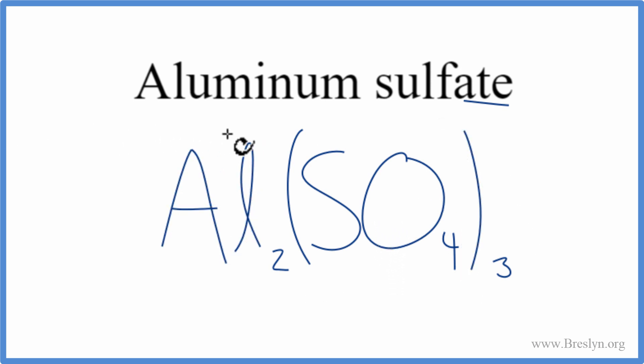Let's check our work real quick. Aluminum, we said, was 3 plus, and then the sulfate ion was 2 minus. So I have three sulfate ions, each one's 2 minus, 3 times 2 minus, that's 6 minus.